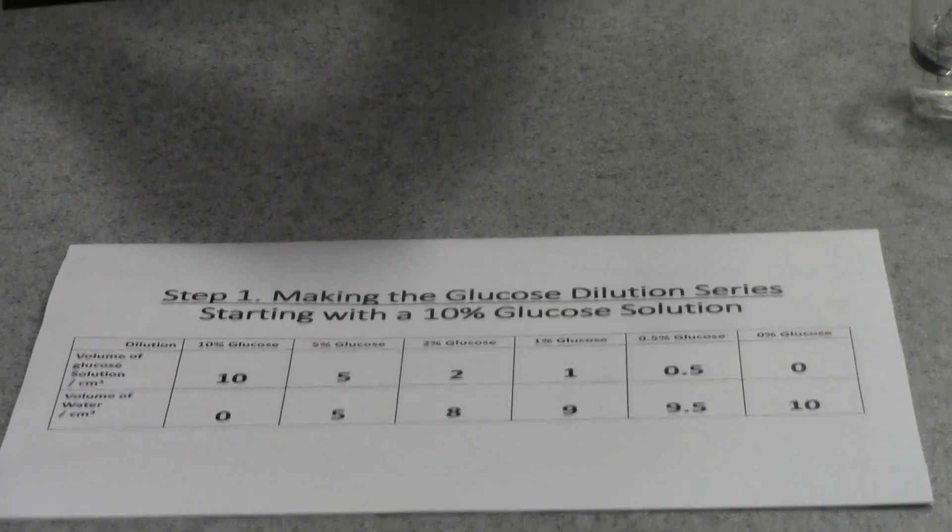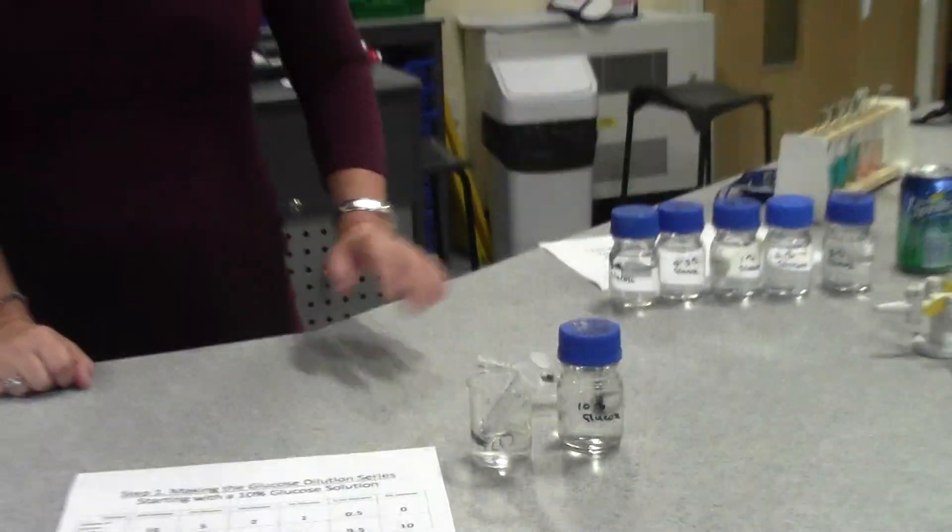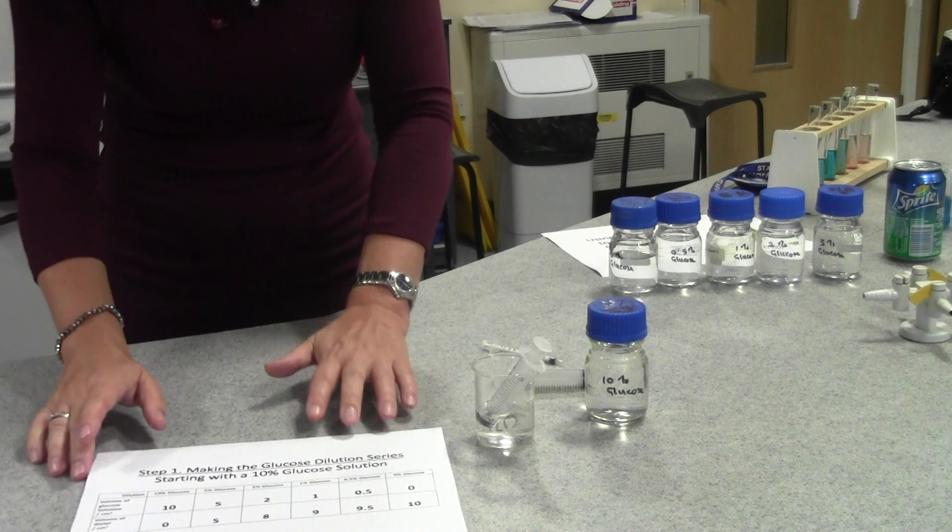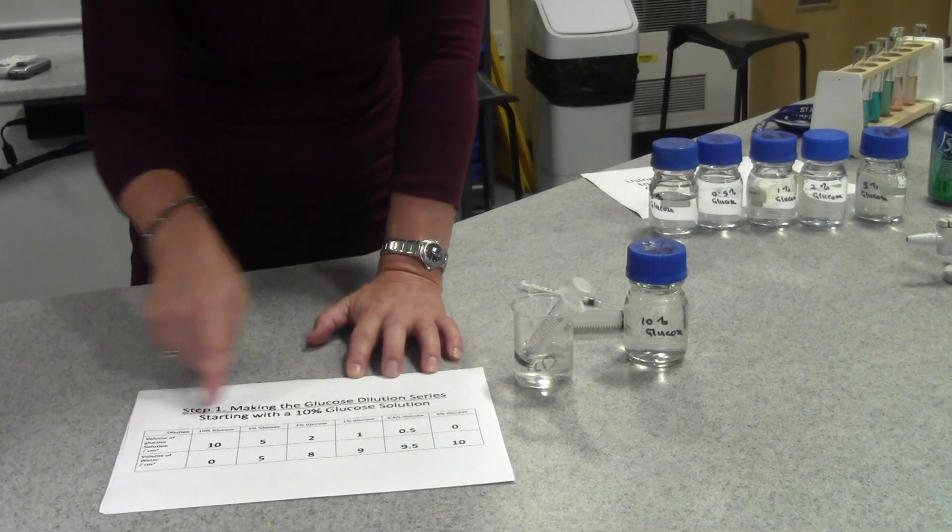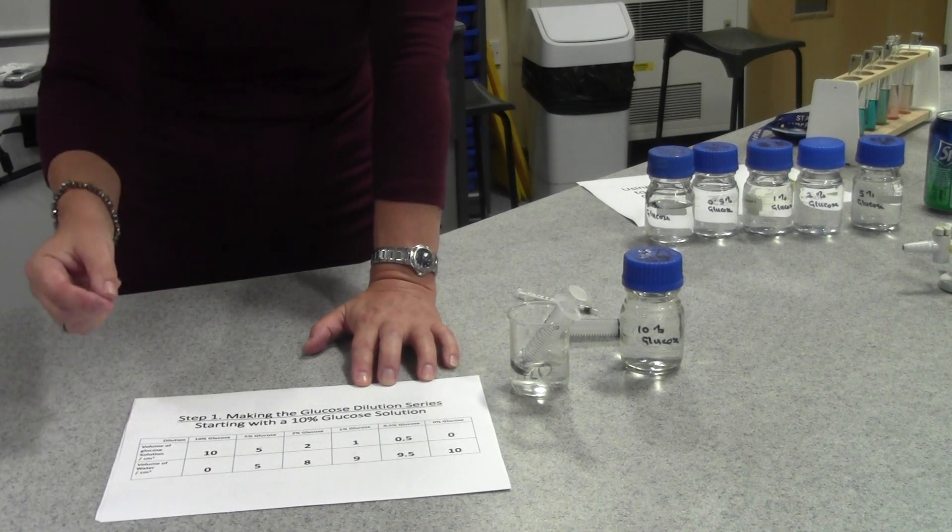To do this, the technician has provided 10% glucose solution and you'll need distilled water and a couple of different syringes. If you've got 10% glucose solution to start with, it's quite easy to make a range of dilutions, and the table here shows you the different volumes you'll need to make 10 centimeters cubed.